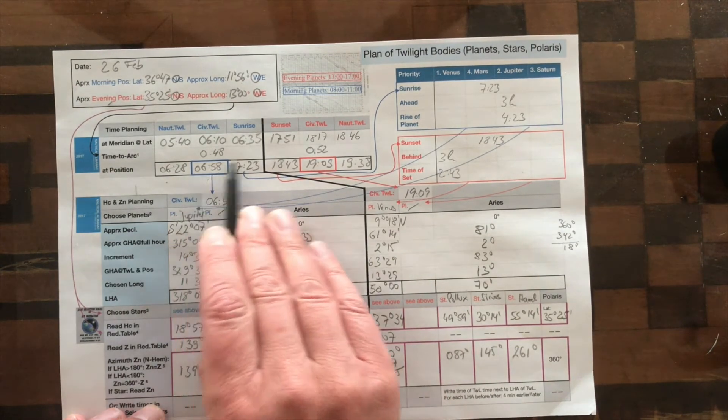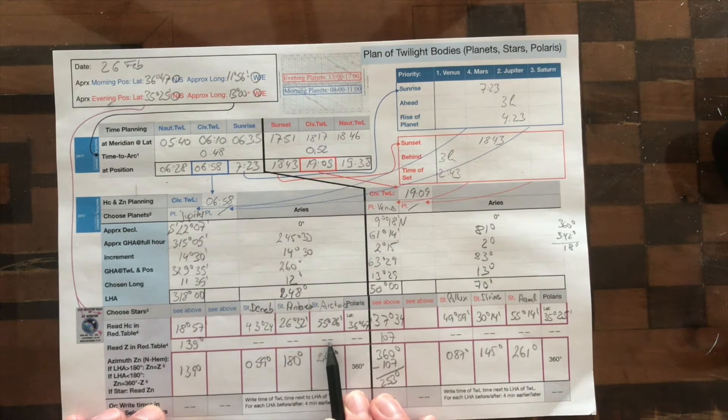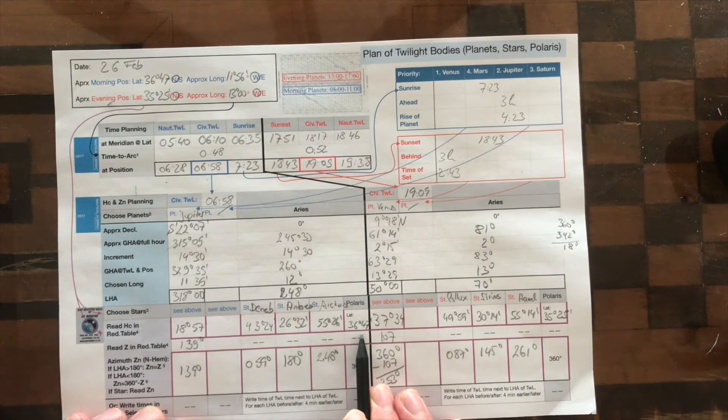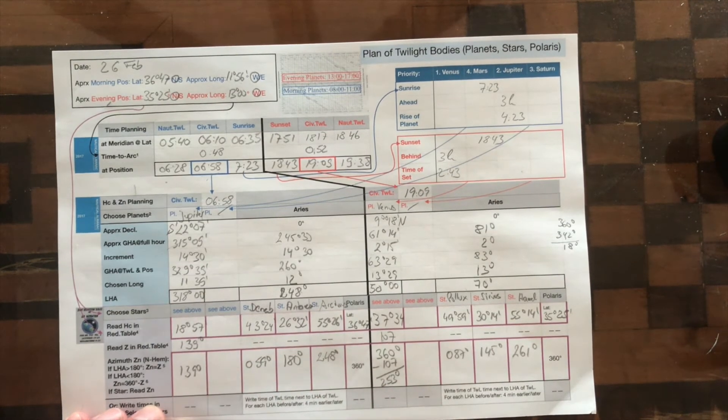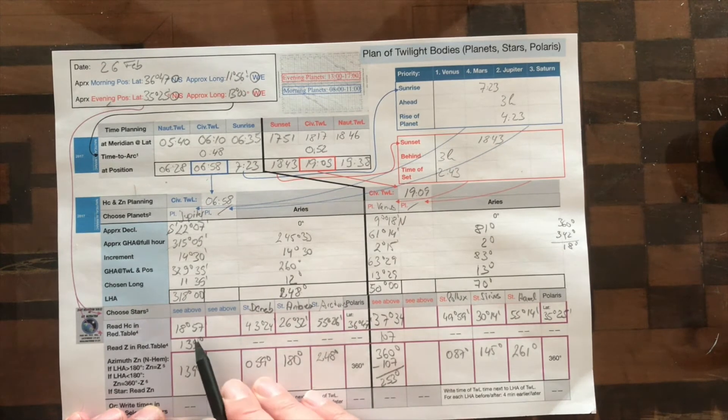And then as you approach sunrise you can then quickly take the Polaris before you lose it, because that's easy to find and very bright. And in the very end, like maybe the Jupiter, because that is very bright as well because it's a planet.